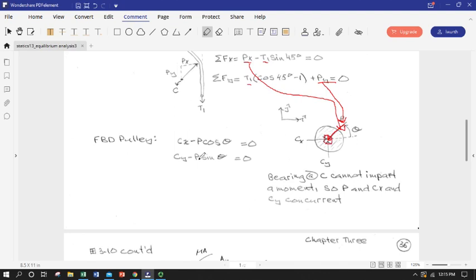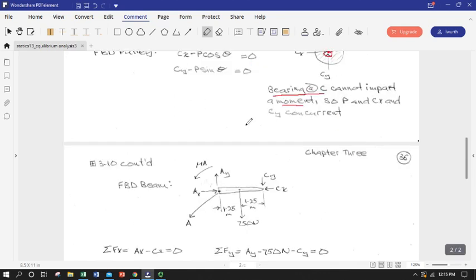So again, we just have some forces. So now we can take P cosine theta, equate it to CX for the sum of the forces in the X, and P sine theta and equate it to CY for the sum of the forces in the Y. Again, the bearing at C cannot impart a moment. So we only have two equations coming out of this FBD. And we're kind of working our way back towards the wall here.